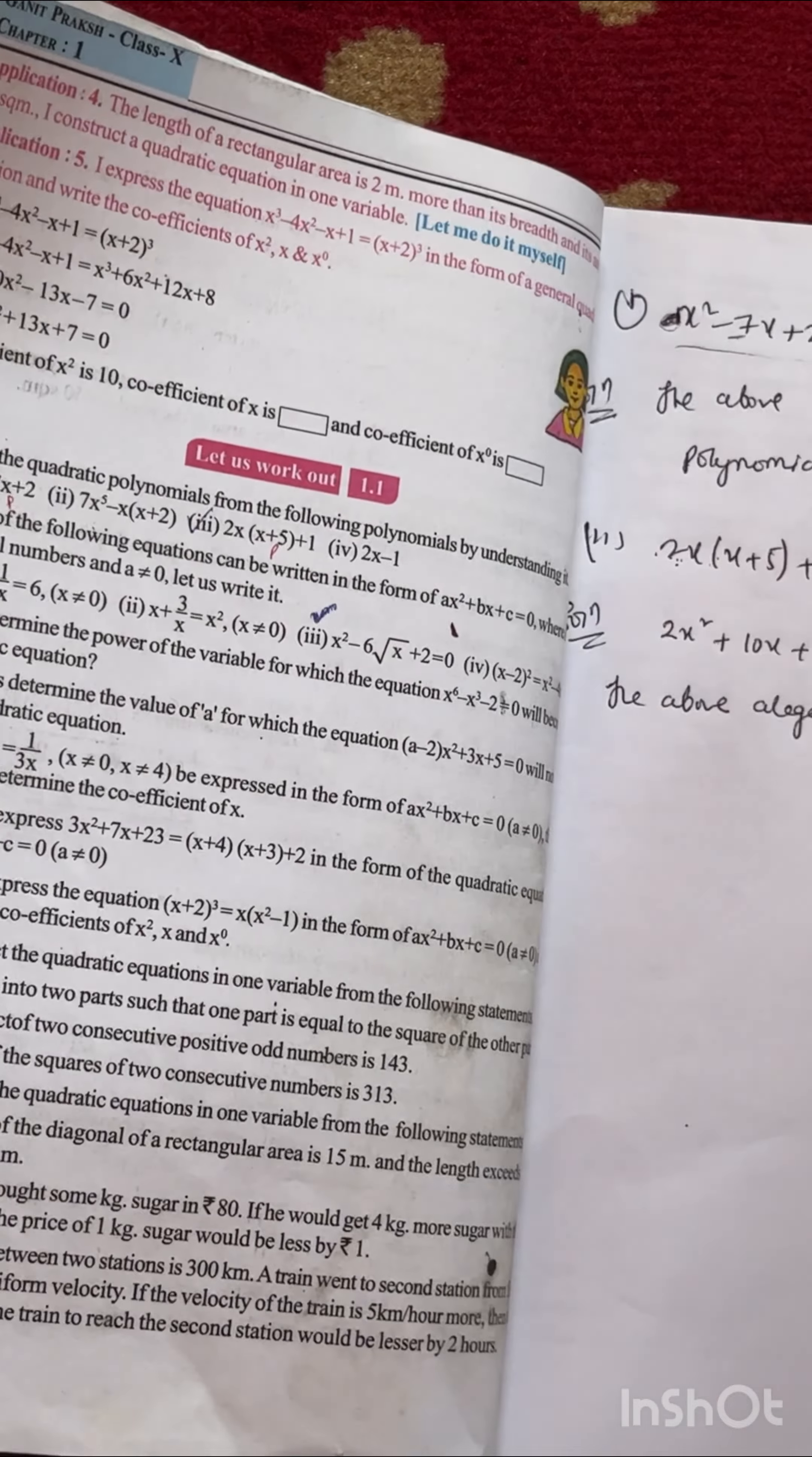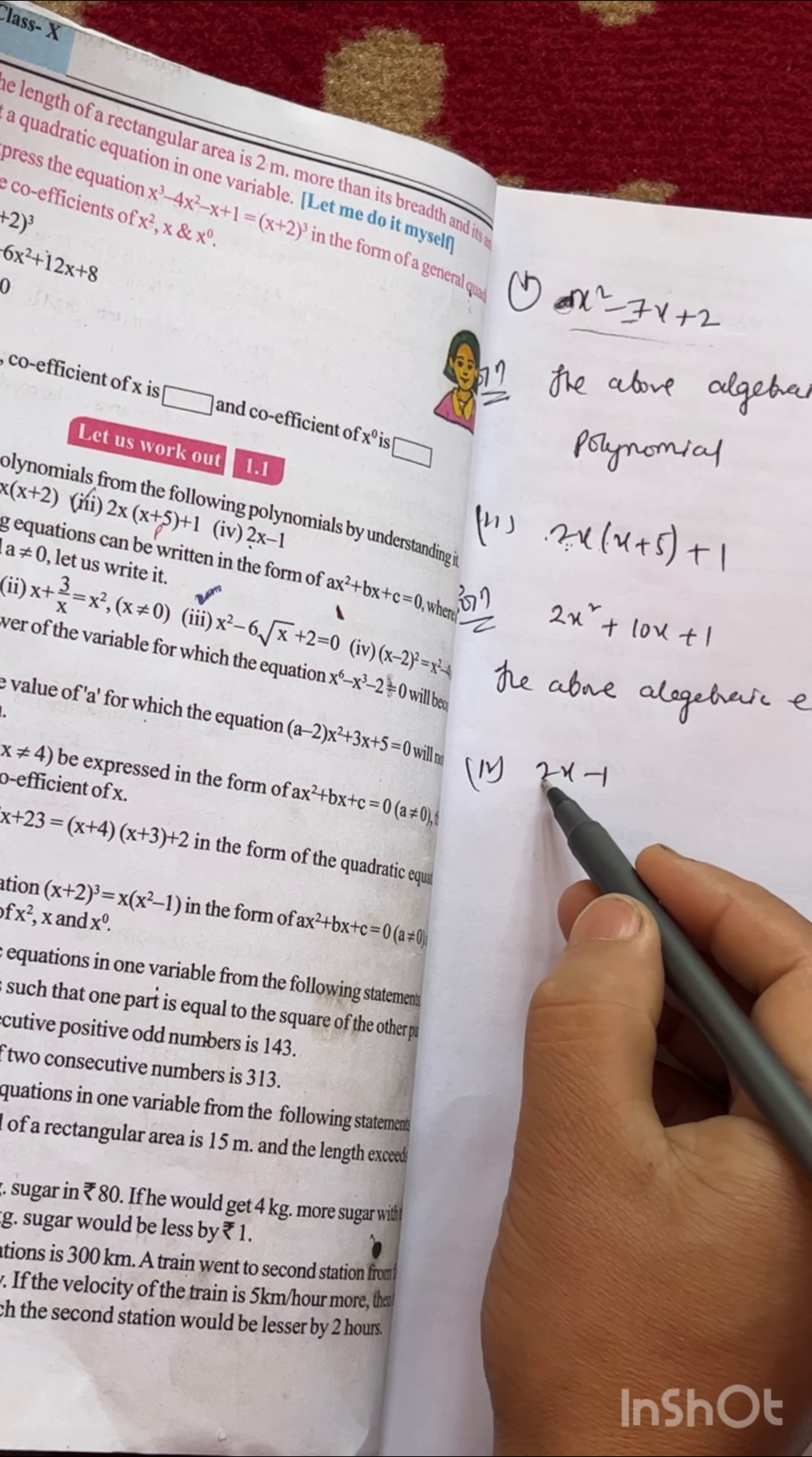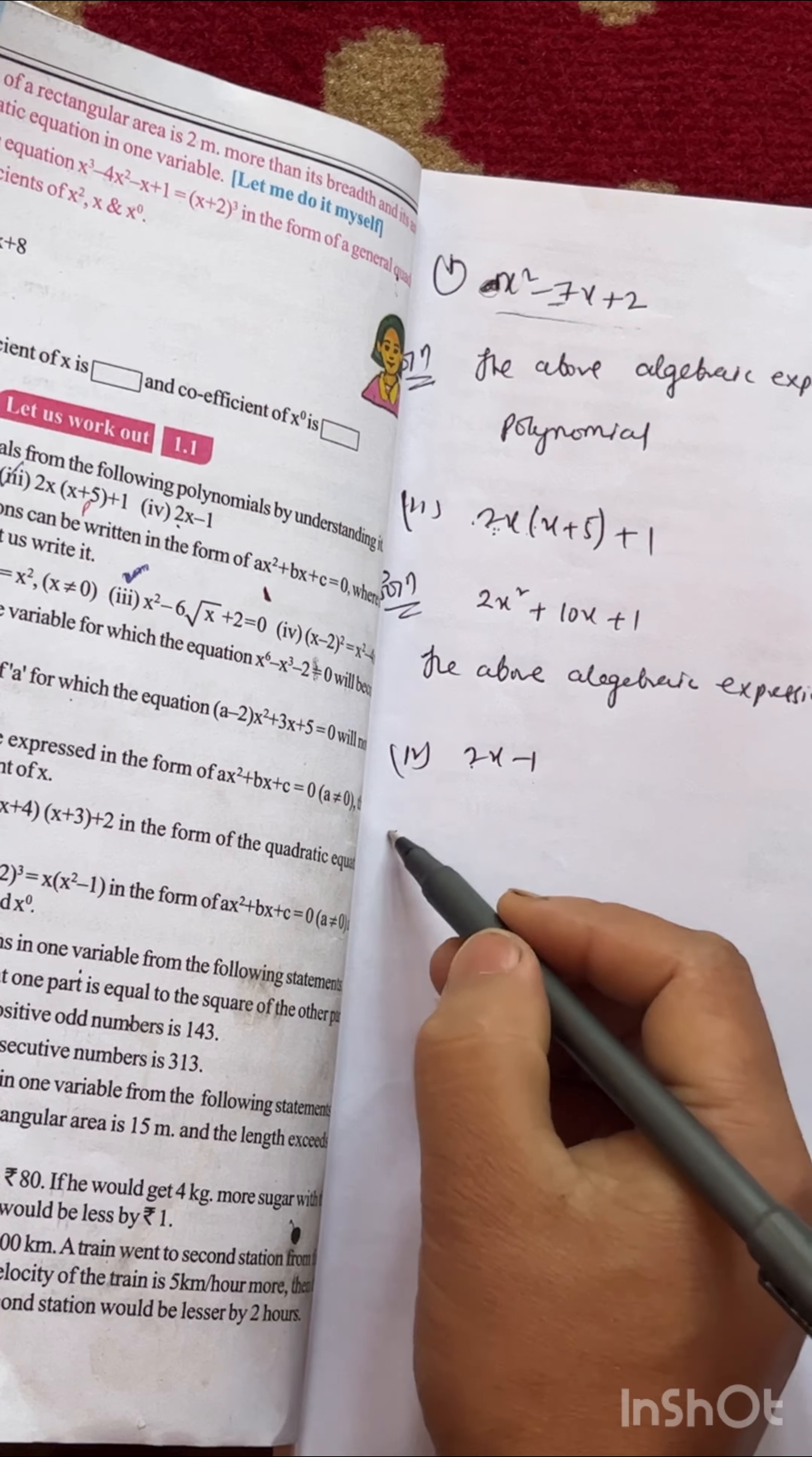Question 4: 2x - 1. Here a is 0, b is 2, and c is -1. Since a = 0, this is not quadratic. This is linear. So the above algebraic expression is not a quadratic polynomial.